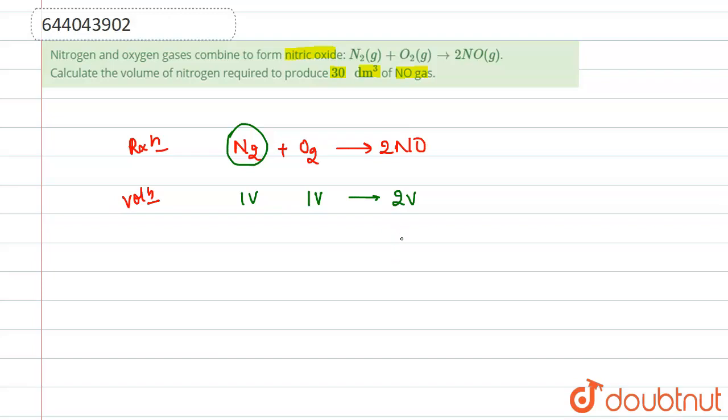If we talk about 2V, the value of 2V is given as 30 dm³. So from here, the value of V will be equal to 15 dm³.